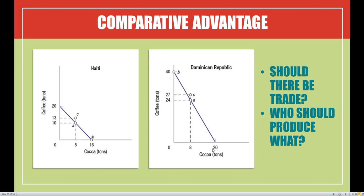But does this mean the Dominican Republic should be producing both goods? The answer is no. We have to focus on comparative advantage to see what each country should be producing, and that's where the opportunity cost calculation comes into play. The easiest way to determine comparative advantage is to build an opportunity cost table, transforming the graph into something simpler to work with.